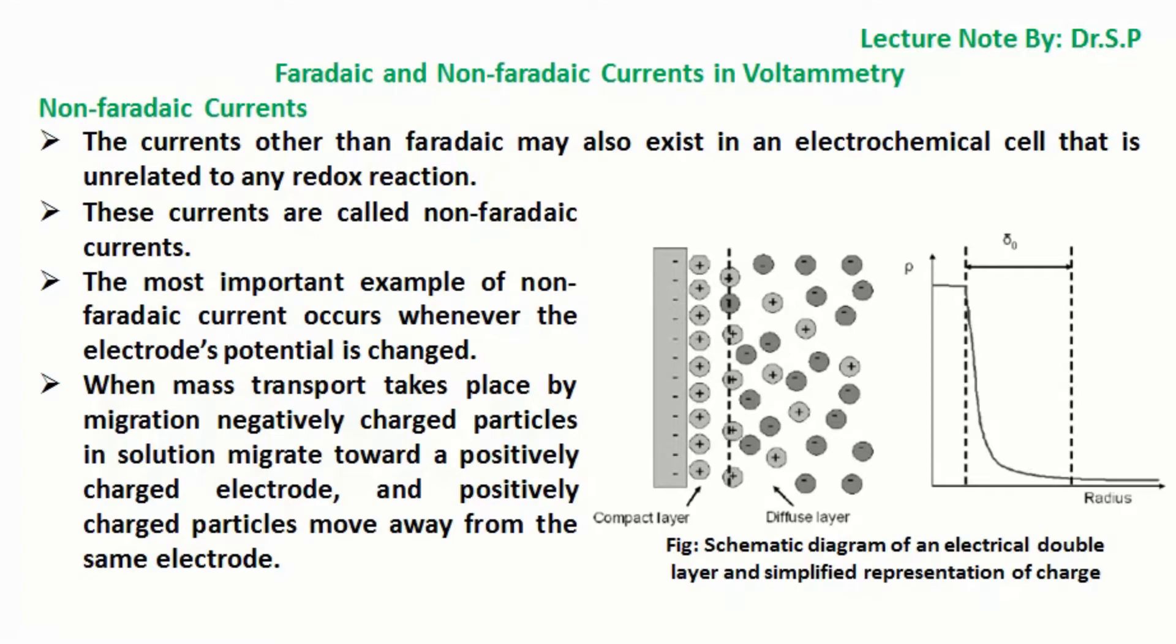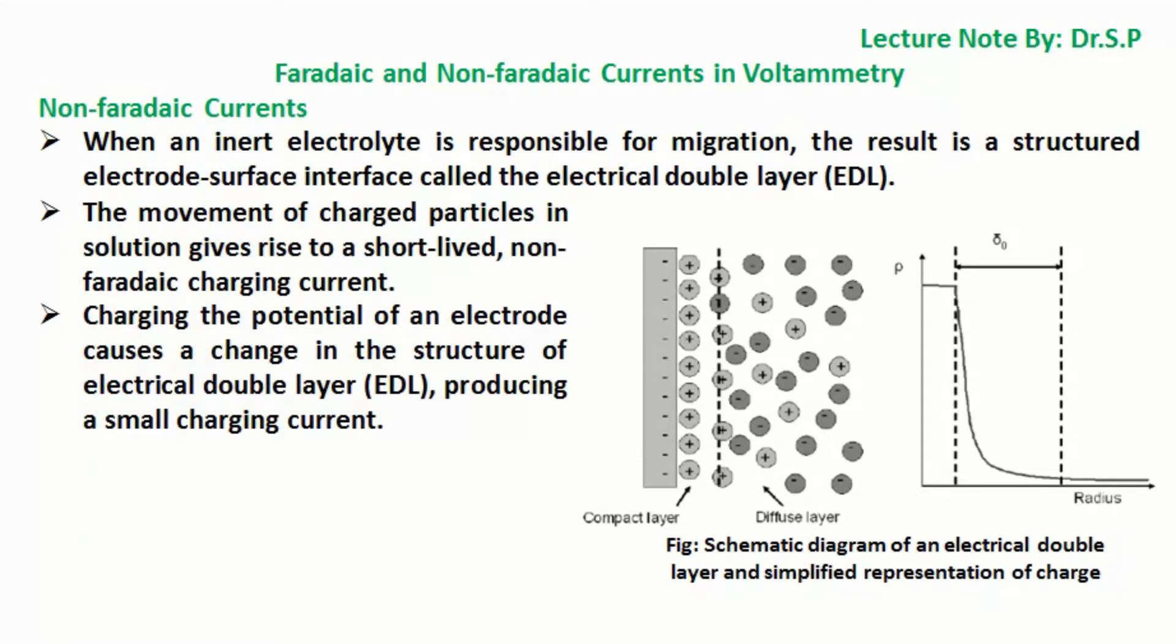When mass transport takes place by migration, negatively charged particles in solution migrate toward a positively charged electrode, and positively charged particles move away from the same electrode. When an inert electrolyte is responsible for migration, the result is a structured electrode surface interface called the electrical double layer (EDL).